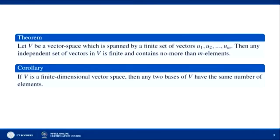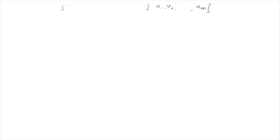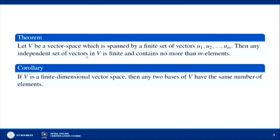The first theorem: let V be a vector space spanned by a finite set of vectors u₁, u₂, ..., uₘ. Then any independent set of vectors in V is finite and contains no more than m elements.